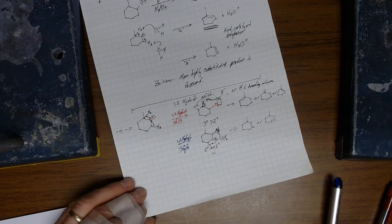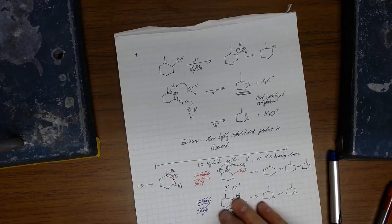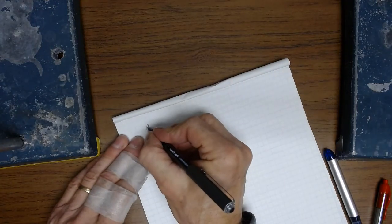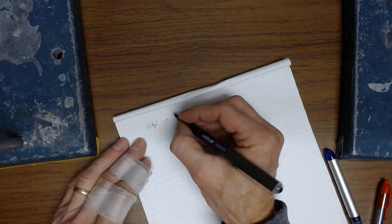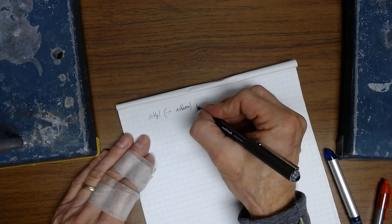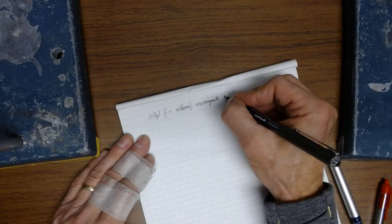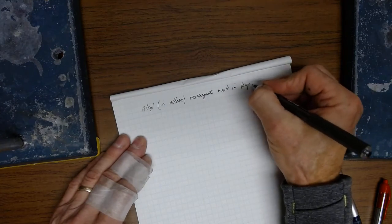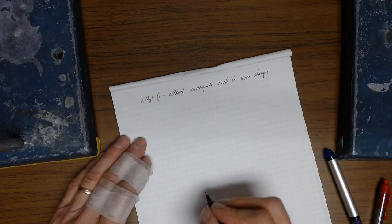Now, there is one other type that I'll let you in on. It is called an alkyl shift. So alkyl shifts, right, i.e. alkane, like a methyl group or whatnot, rearrangements. Result in large changes. Now, I'm not going to give you the specific one to this lab, but I'll give you an example.